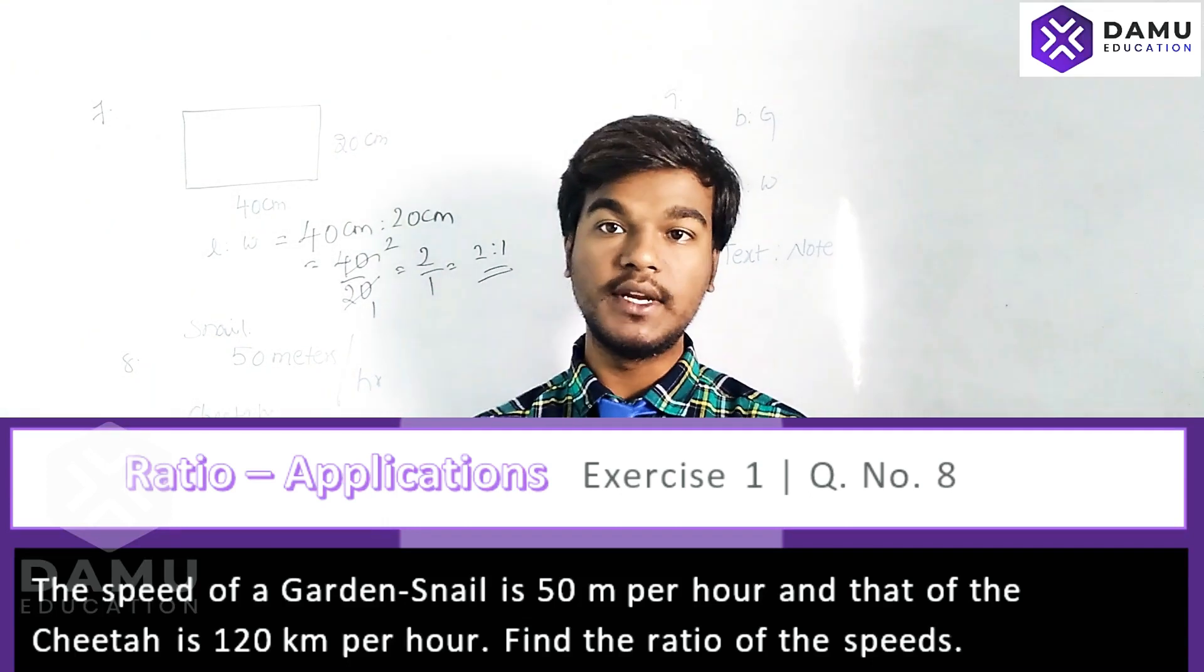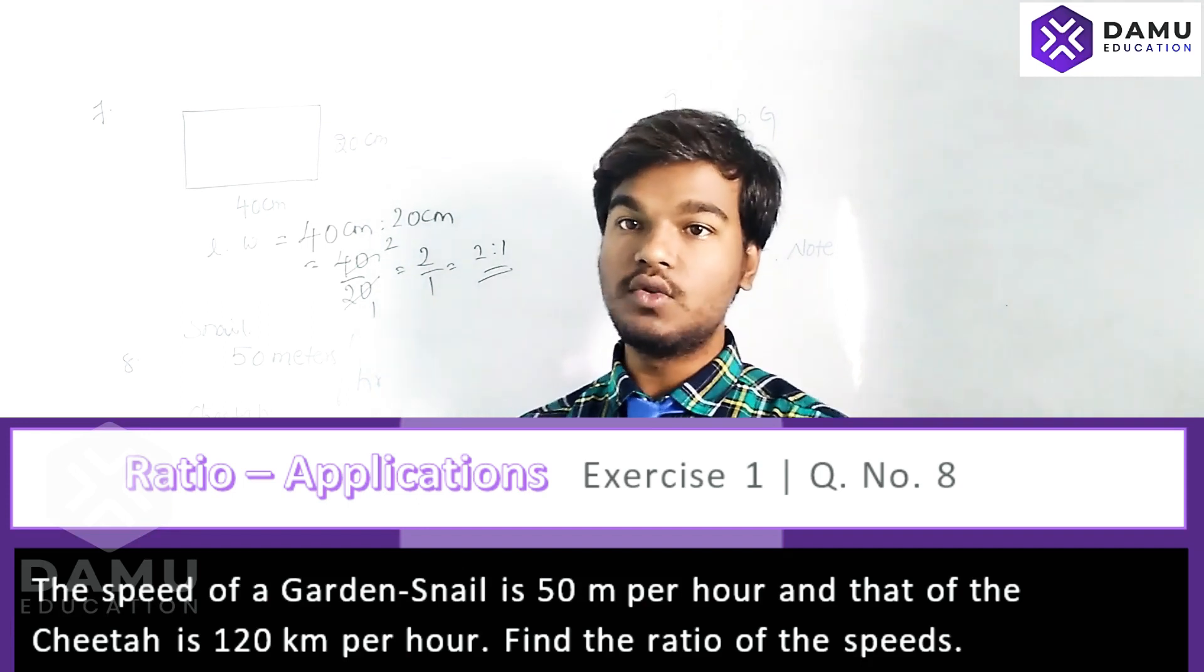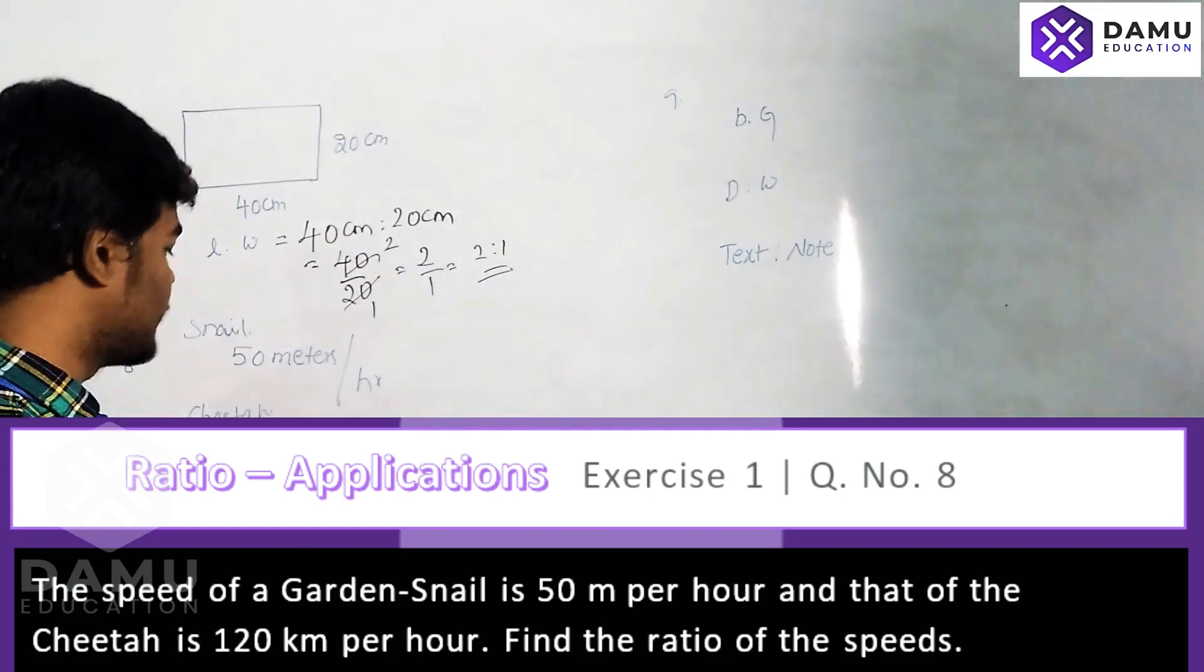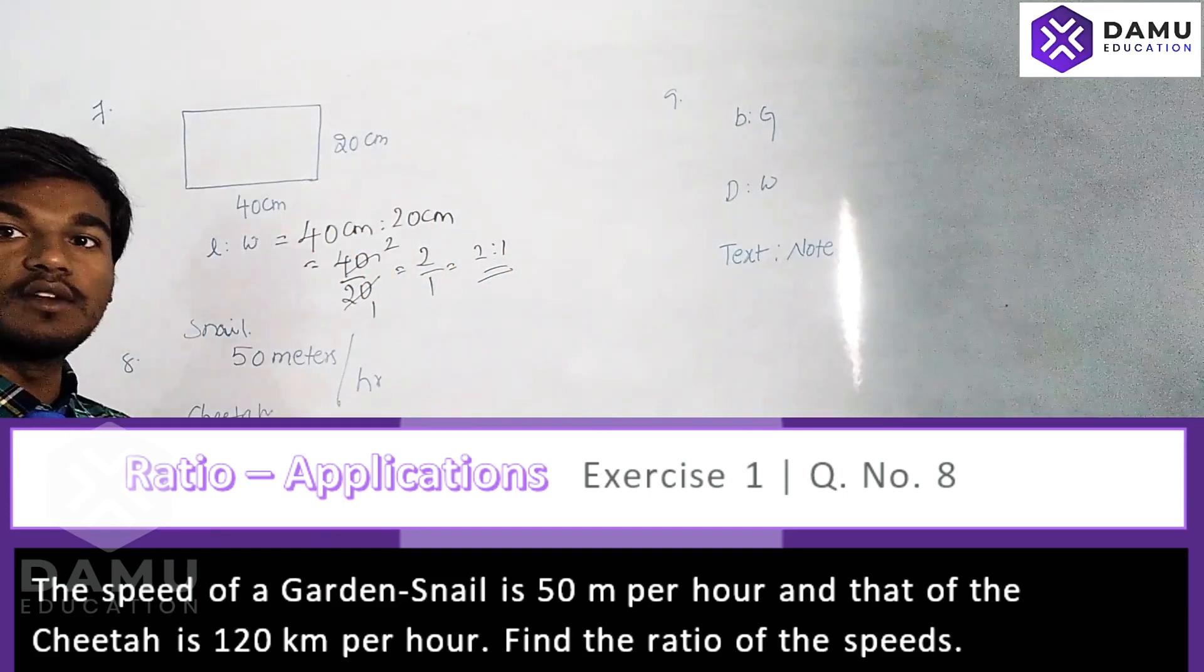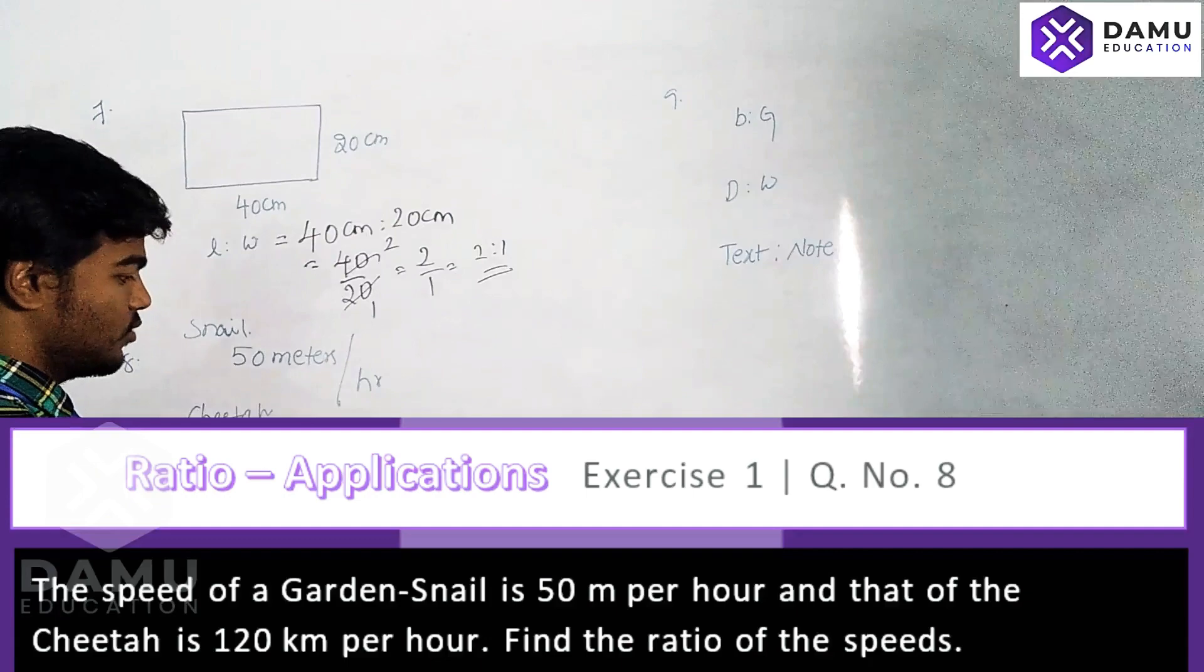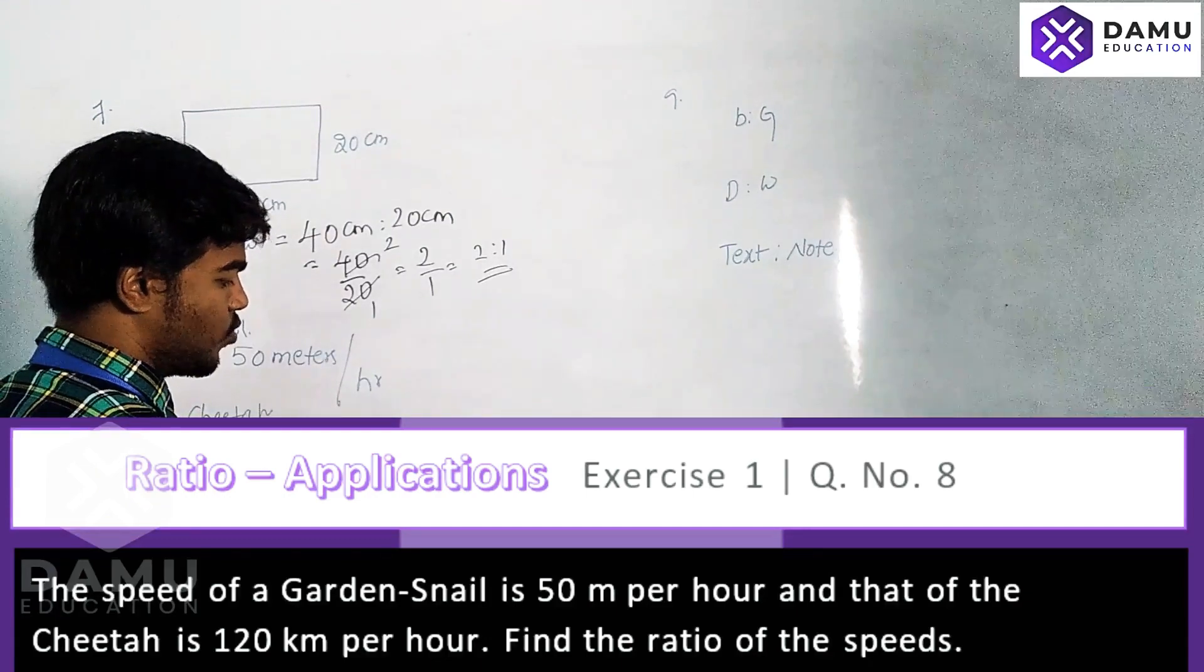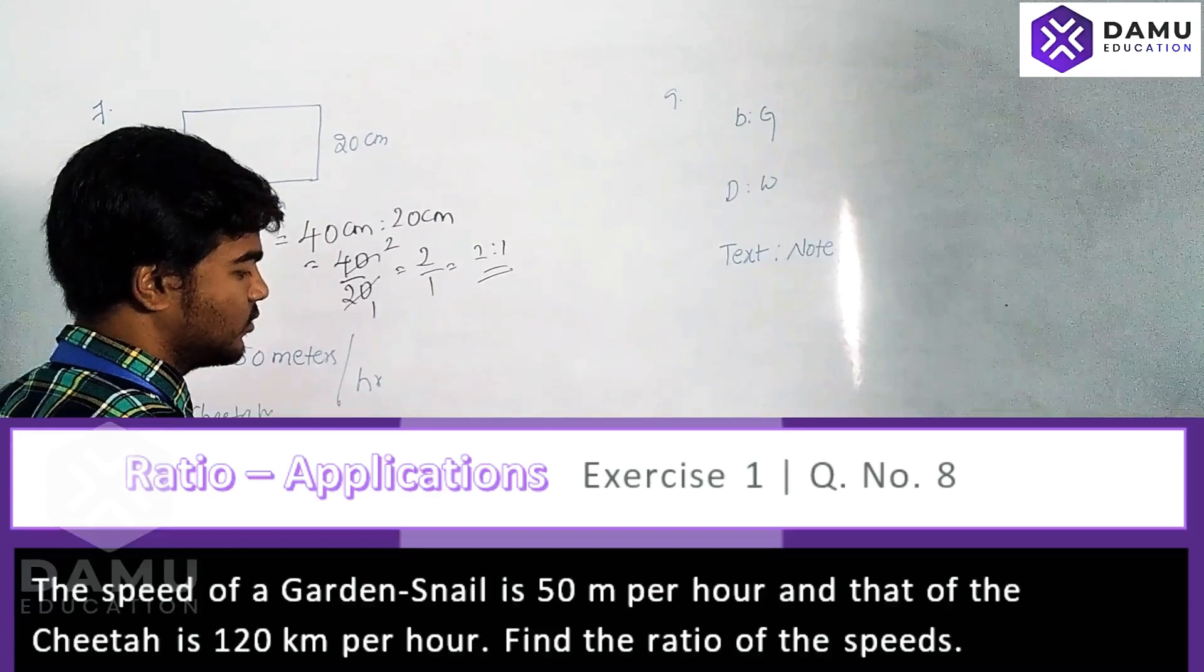It is better to convert the bigger one to the smaller one. So 120 kilometers means 120 times 1 kilometer, which is 1,000 meters. That will be 120,000 meters per hour.